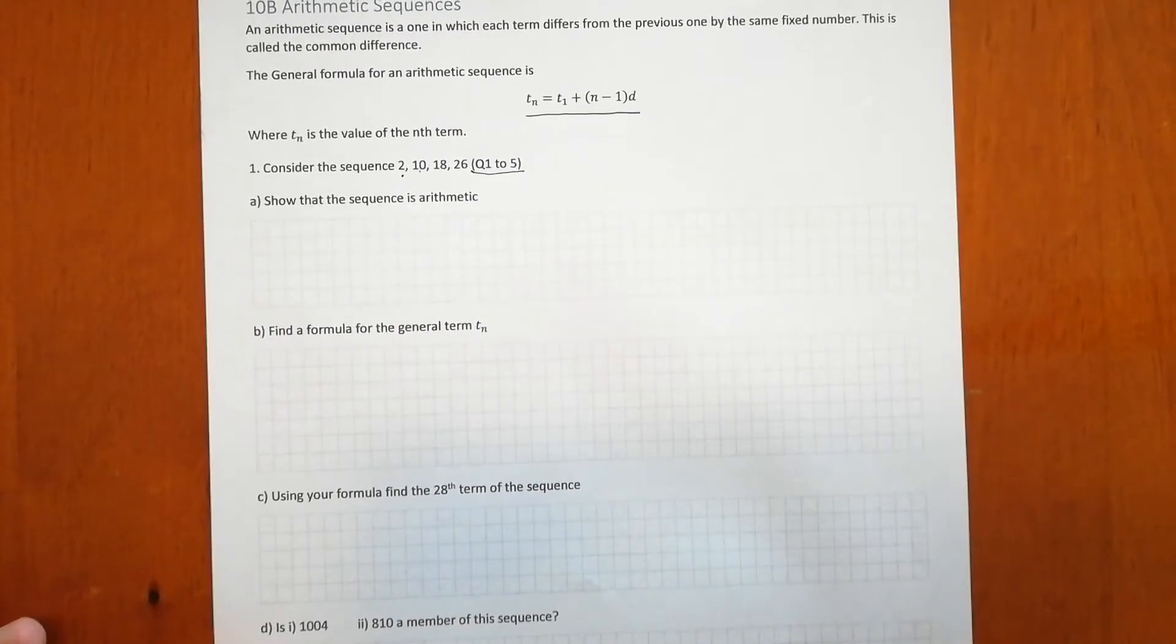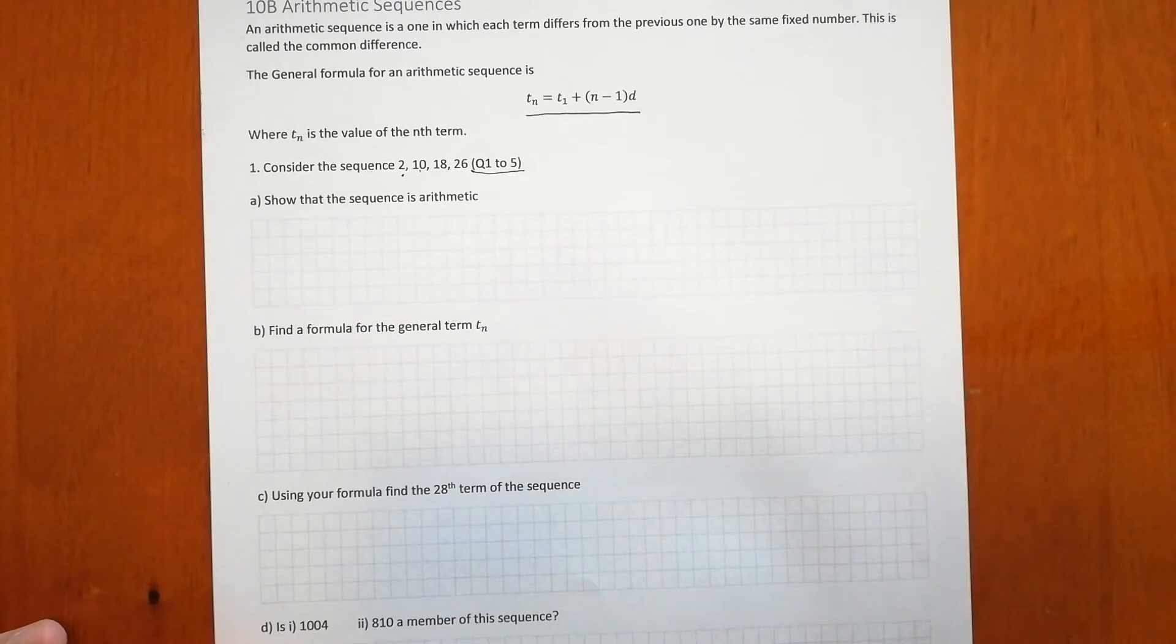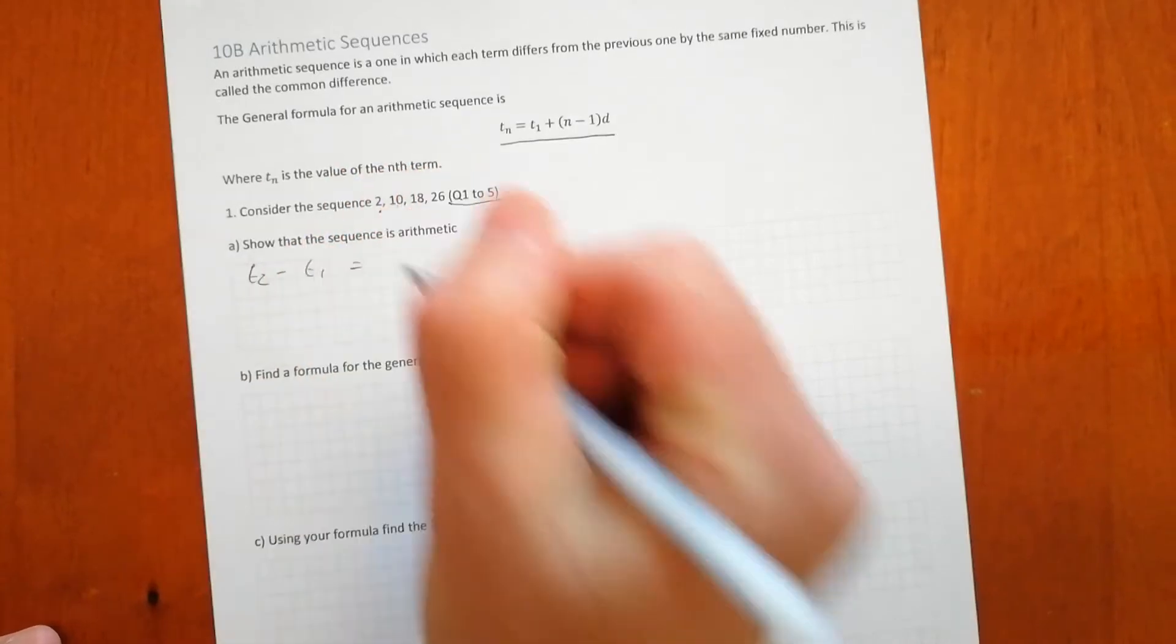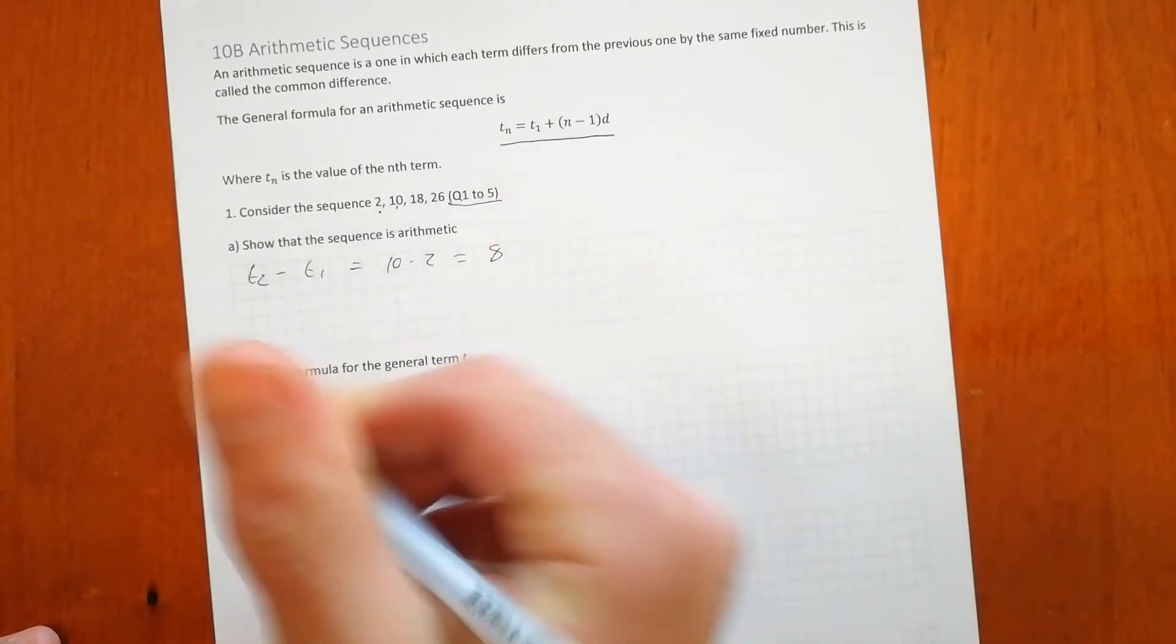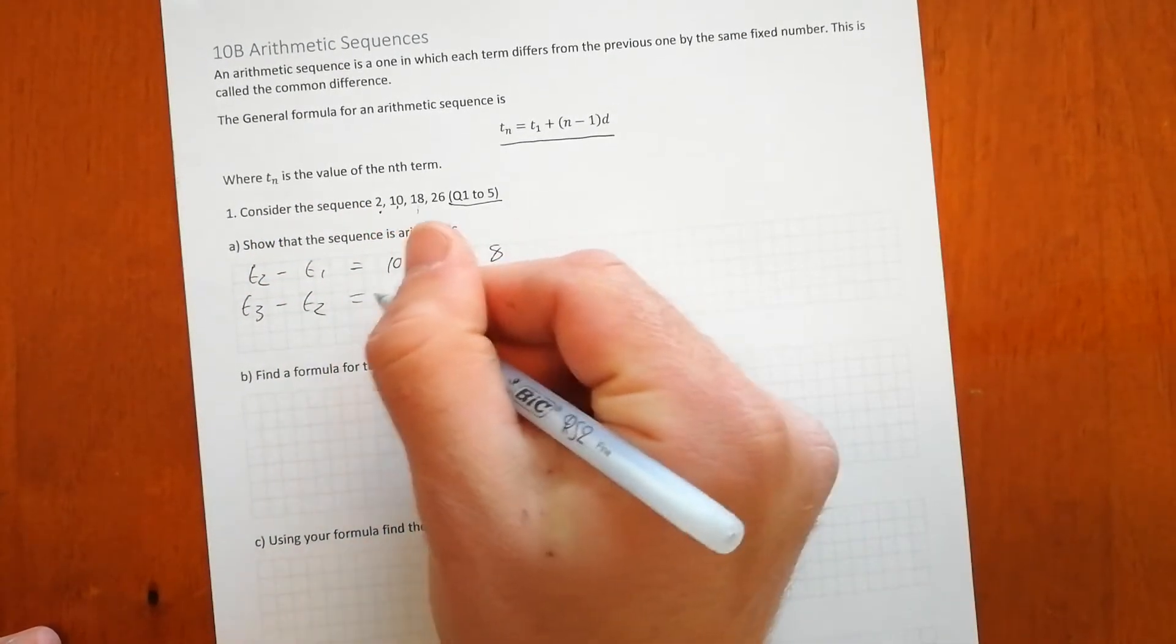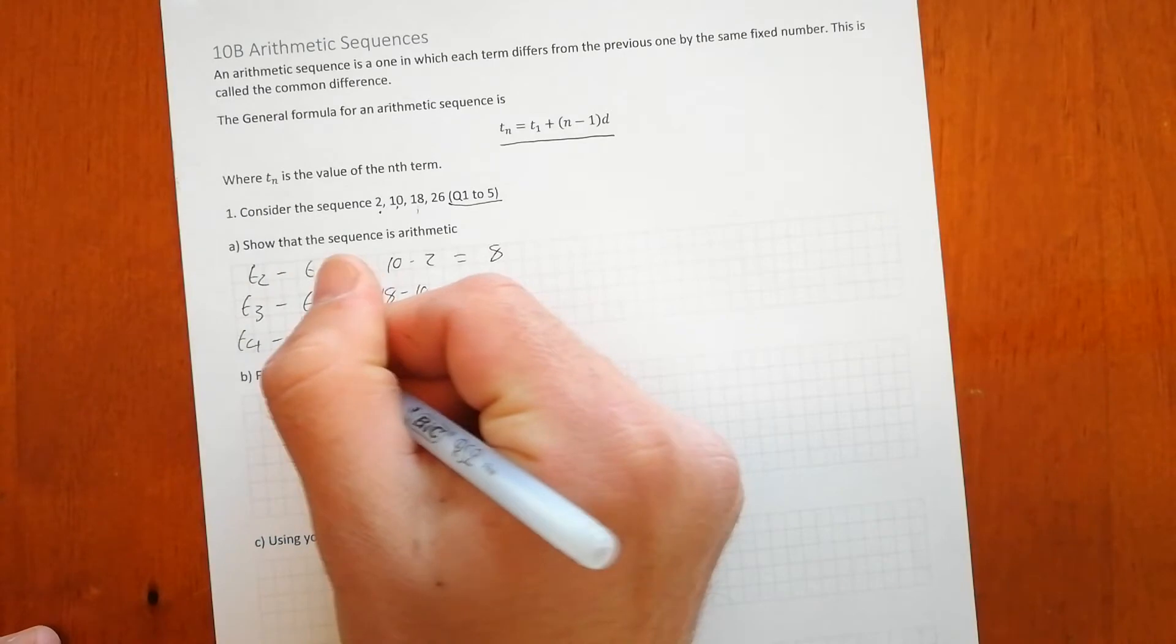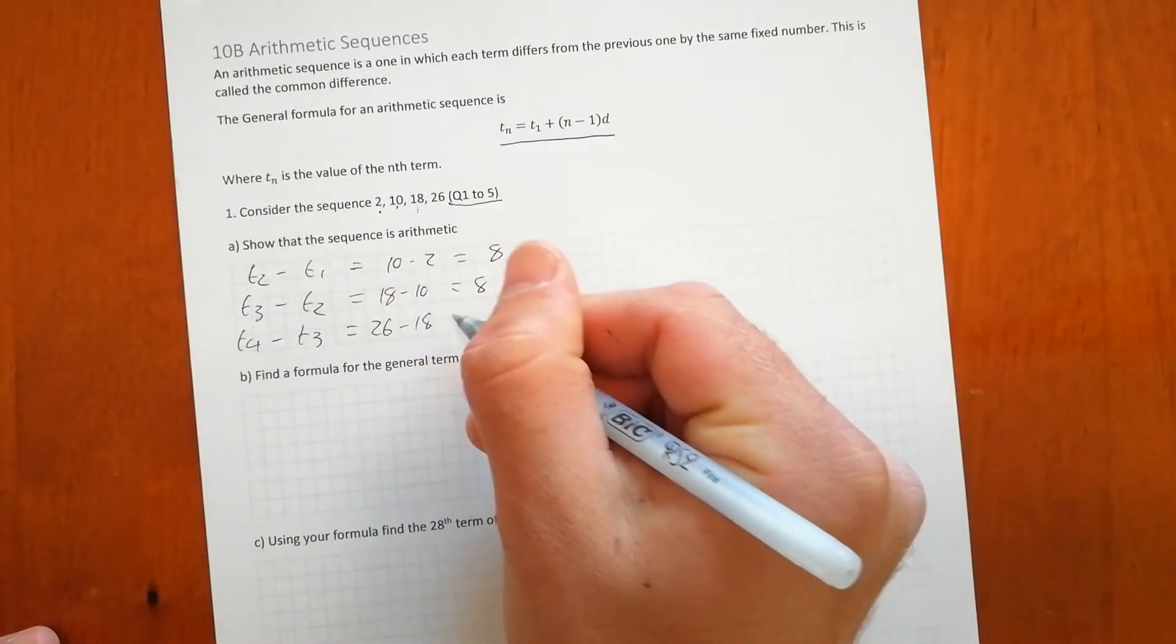So the way we show that the sequence is arithmetic is that the difference is the same every time. If we have the second term take the first term, that's going to be 10 take 2, which is 8. If we have the third term take the second term, 18 take 10, that's 8. If we have the fourth term take the third term, we've got 26 take 18, that is 8.